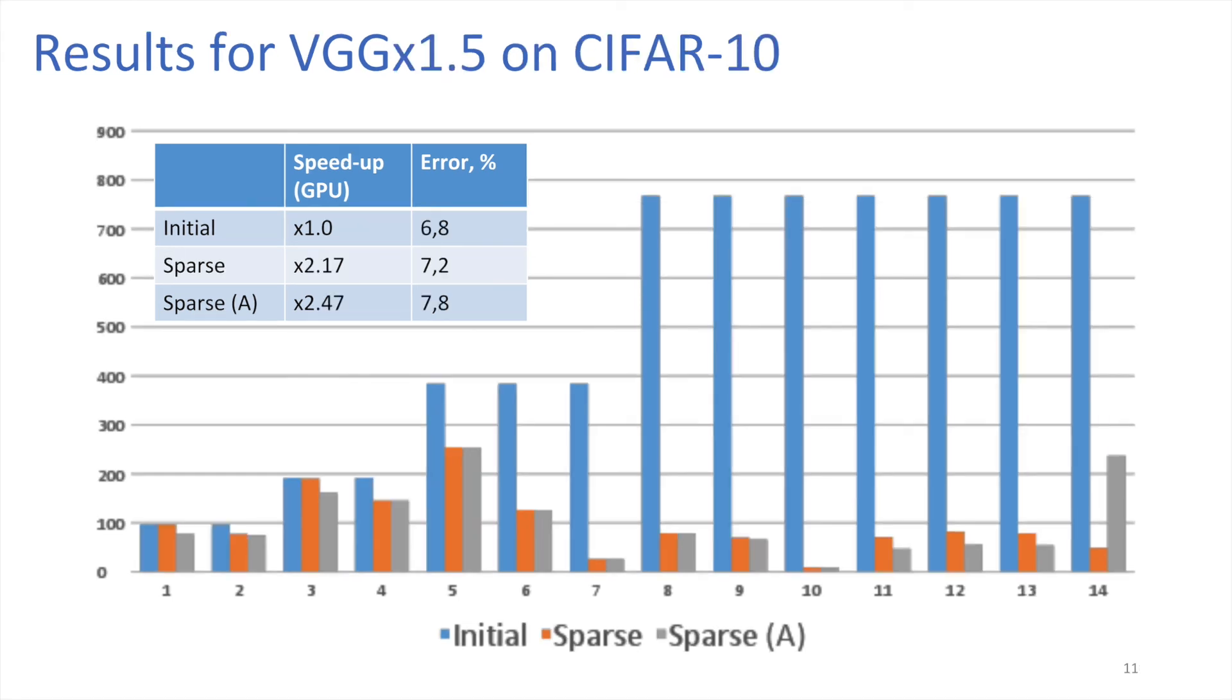Here we report the same results for a larger network. The width of all layers is 50% larger than in the previous experiment. We achieve even higher acceleration with lower accuracy degradation.